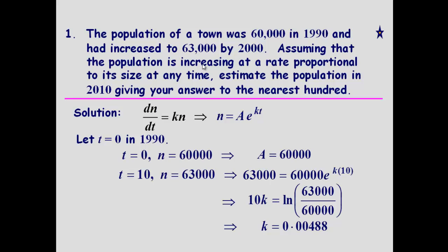So far then, we've found A, we've found k. Estimate the population in 2010, giving your answer to the nearest hundred. Well, again, using the same formula, we know that for 2010, t will be 20. We now know what k is. We know that A is 60,000, so we can then find our n.